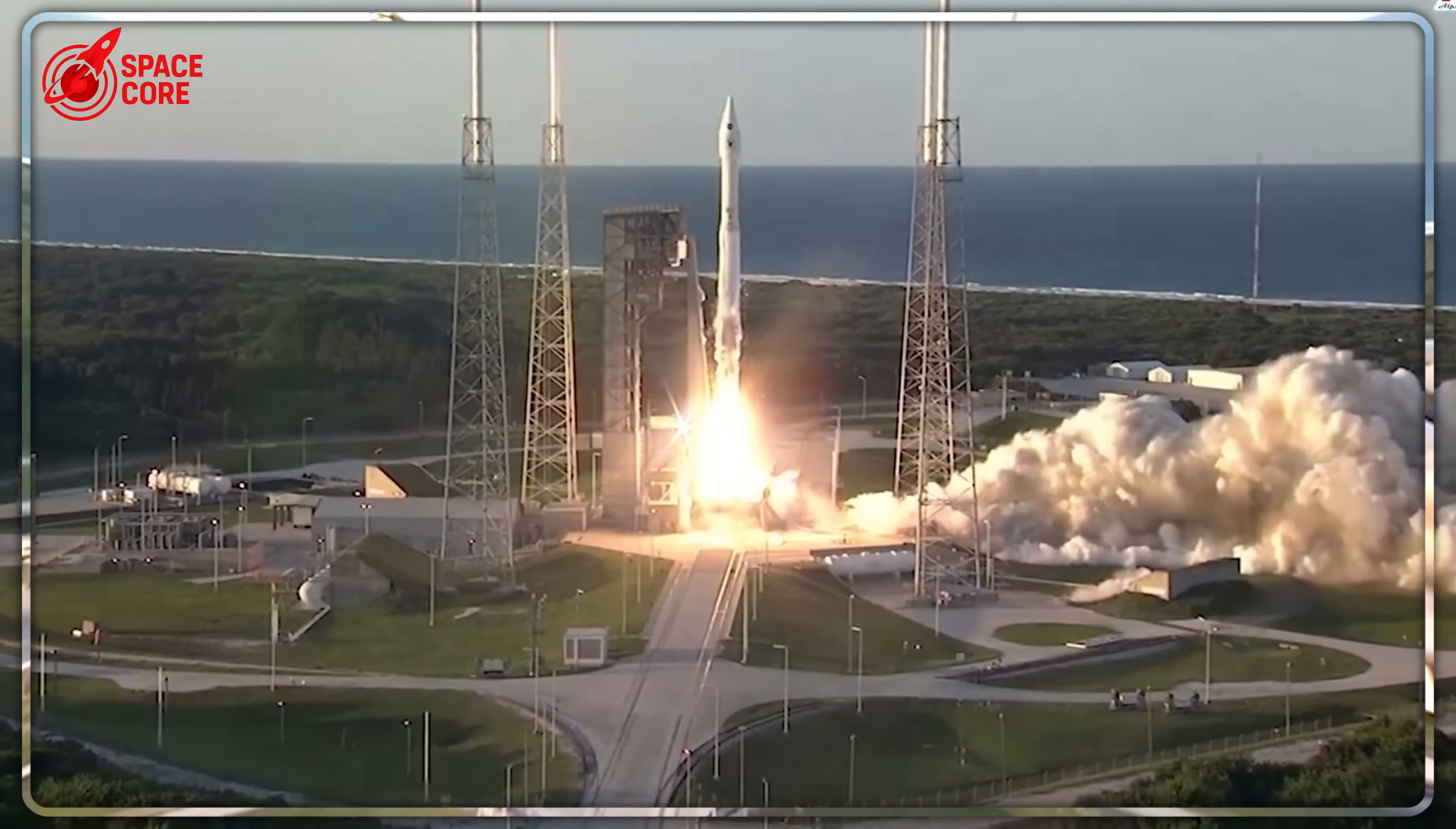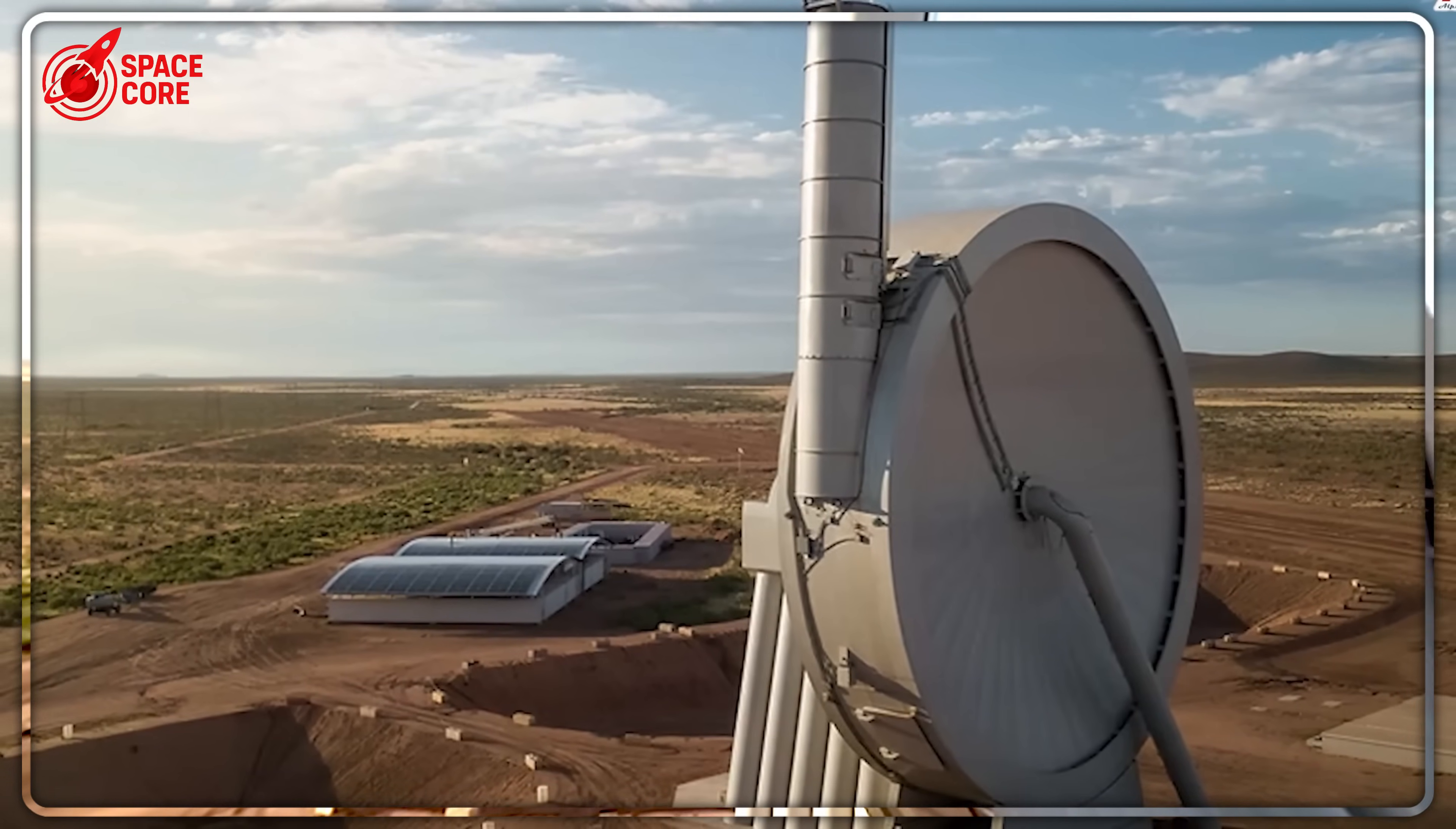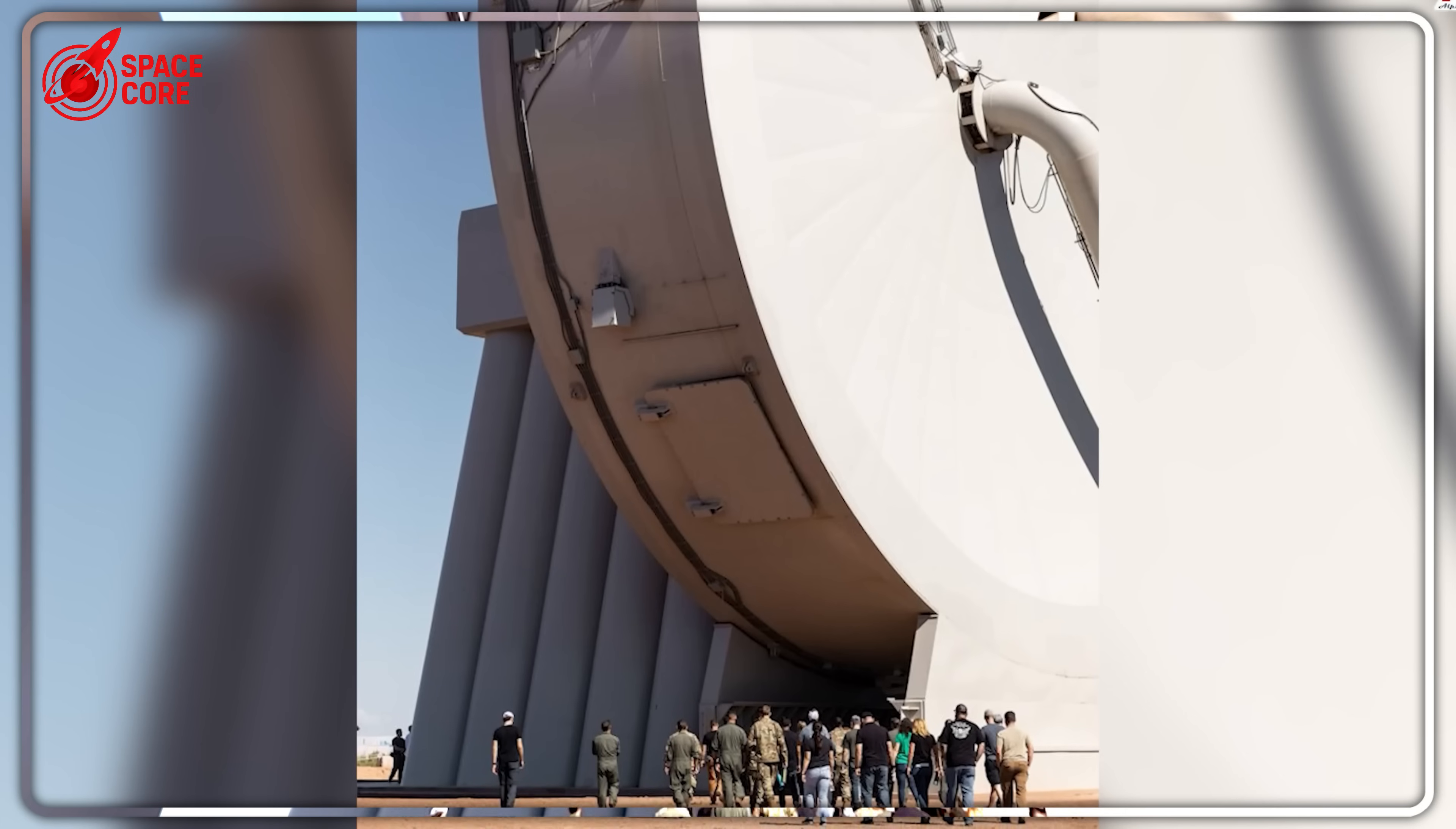What happens when a revolutionary technology arrives five years too late? Spin Launch discovered the answer the hard way. New CEO David Wren's immediate pivot to conventional rockets for their Meridian Space Constellation essentially admitted defeat after 10 years of development. This wasn't about technical limitations. Industry insiders revealed that Spin Launch's board lost confidence in kinetic launch technology entirely. The $135 million contract with NanoAvionics for traditional satellite deployment marked their complete abandonment of centrifugal systems. Spin Launch's environmental advantages, their primary selling point, became irrelevant as SpaceX's methane-fueled Starship promised similar sustainability with 500 to 1,000 times superior payload capacity.